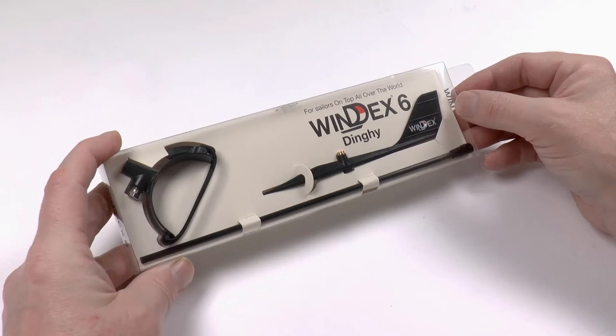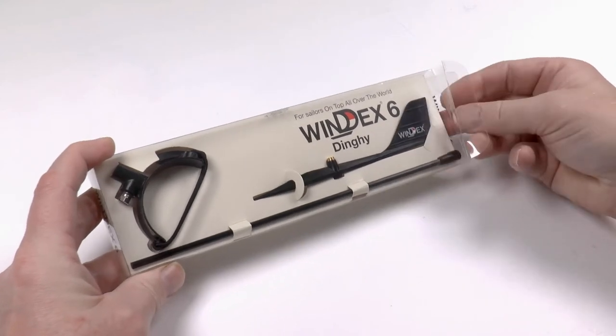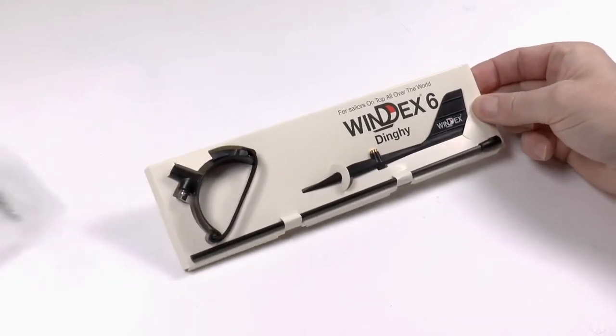Hi, in this video we will assemble a Windex 6 for dinghies. We're starting by removing all of the parts from the box.